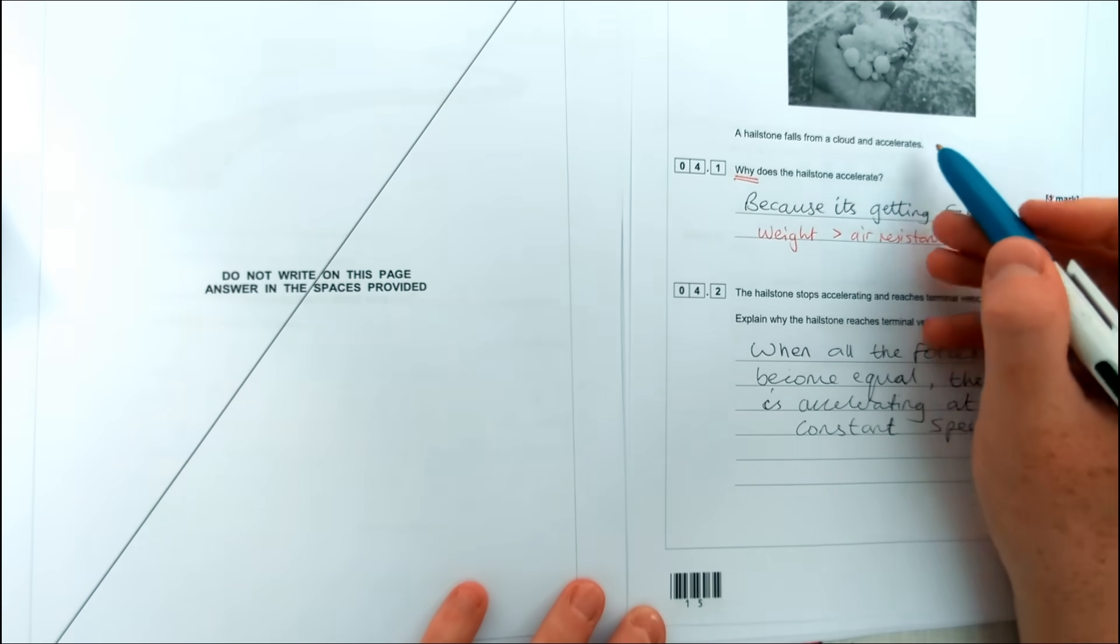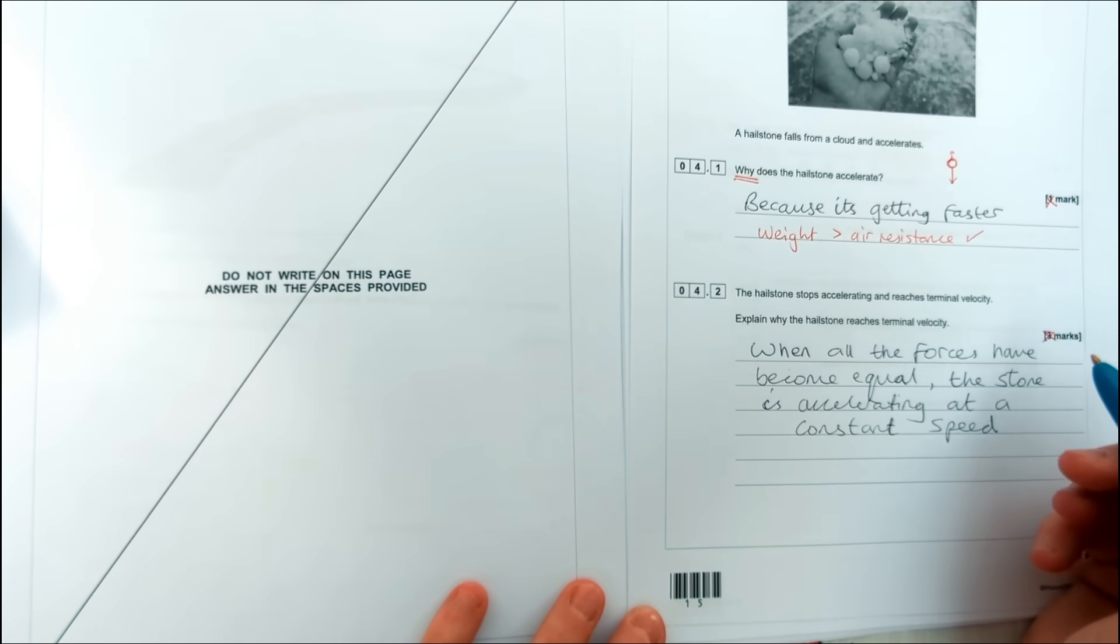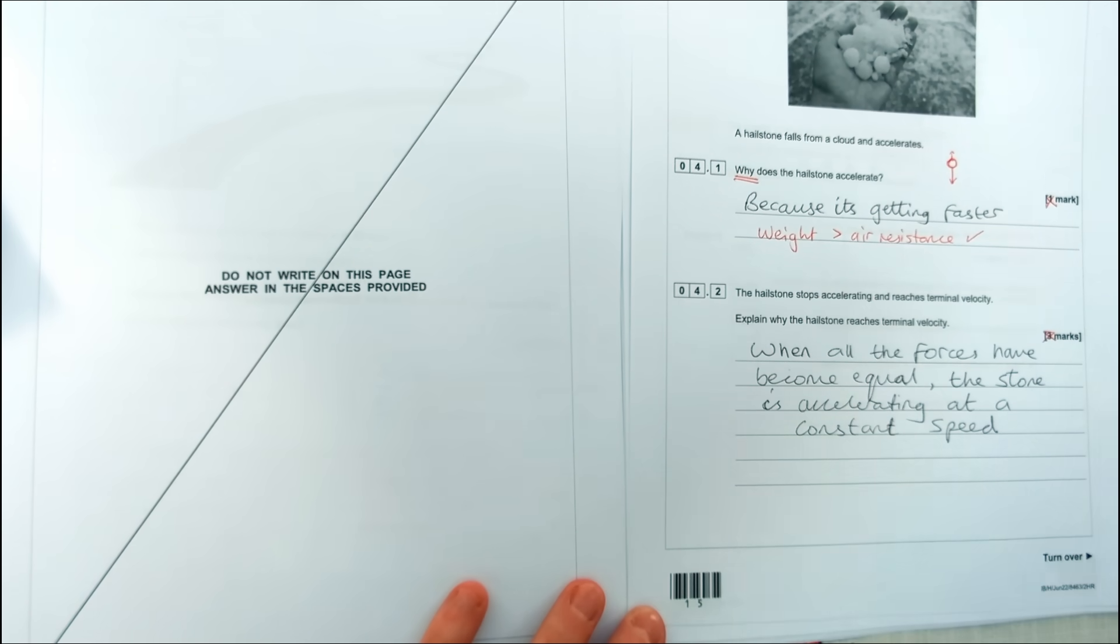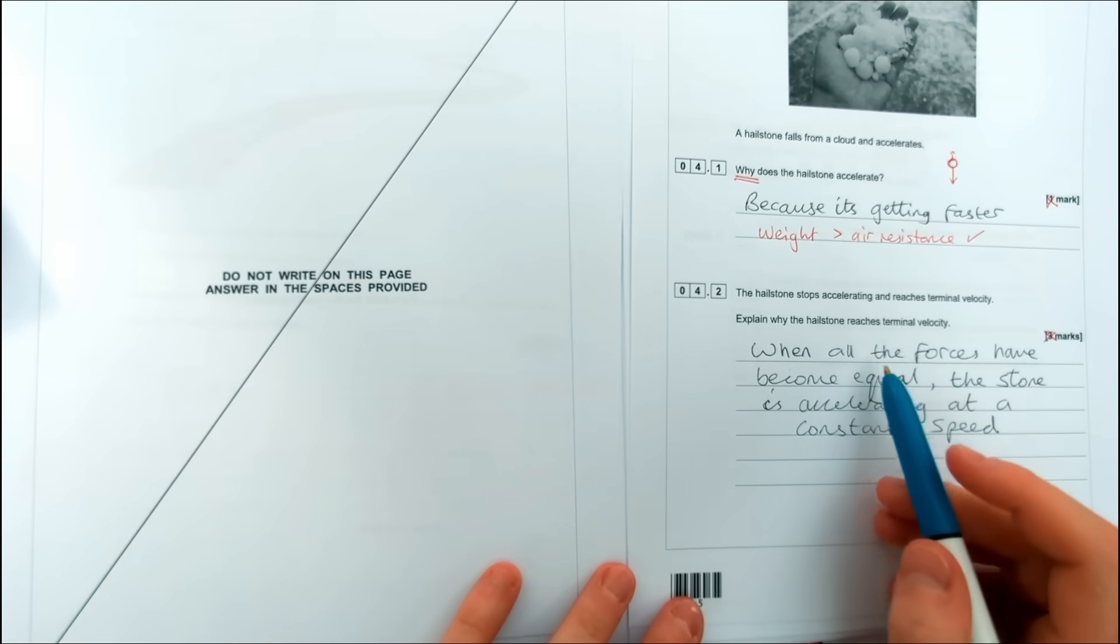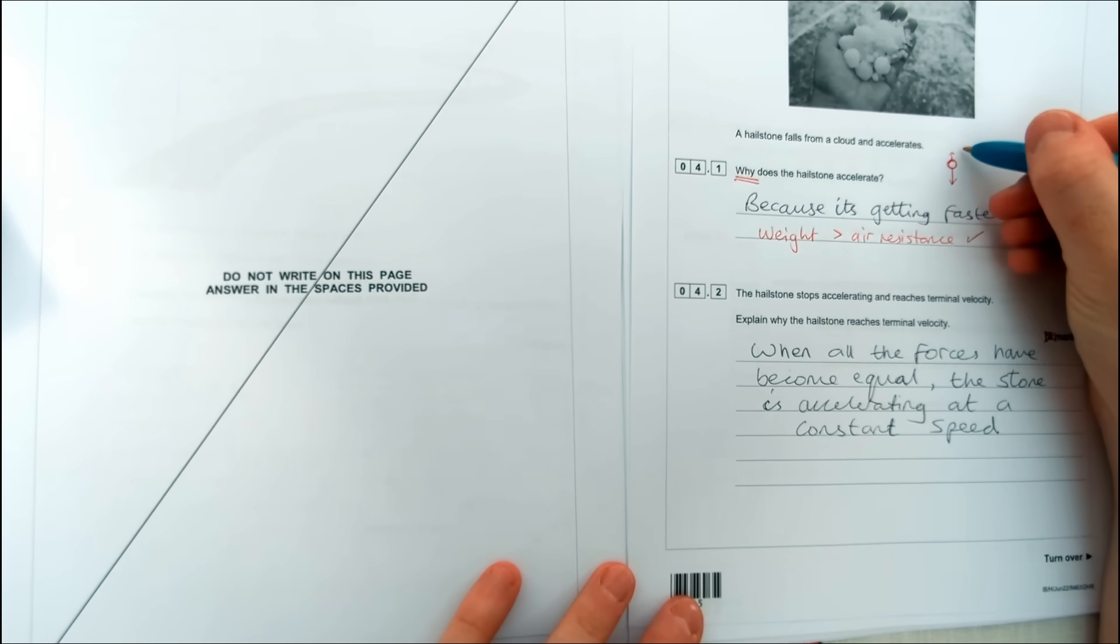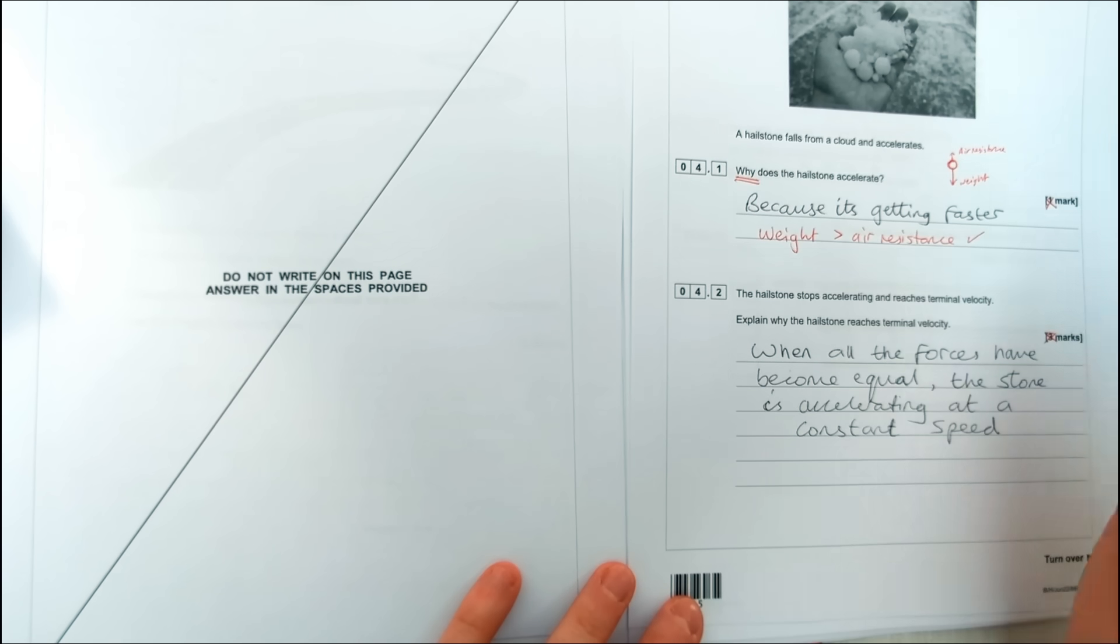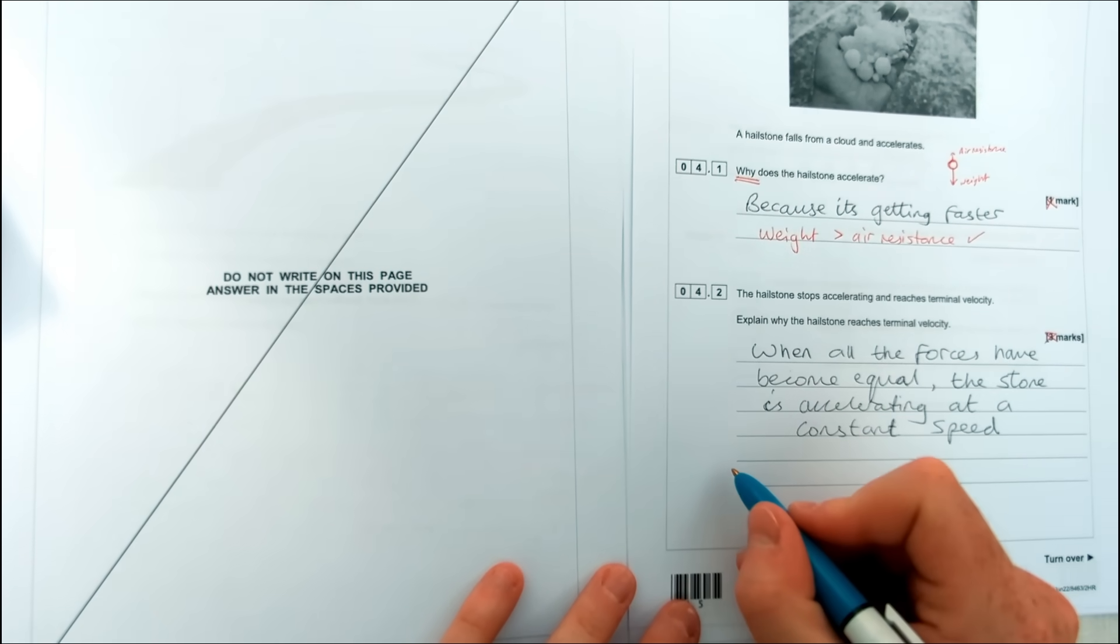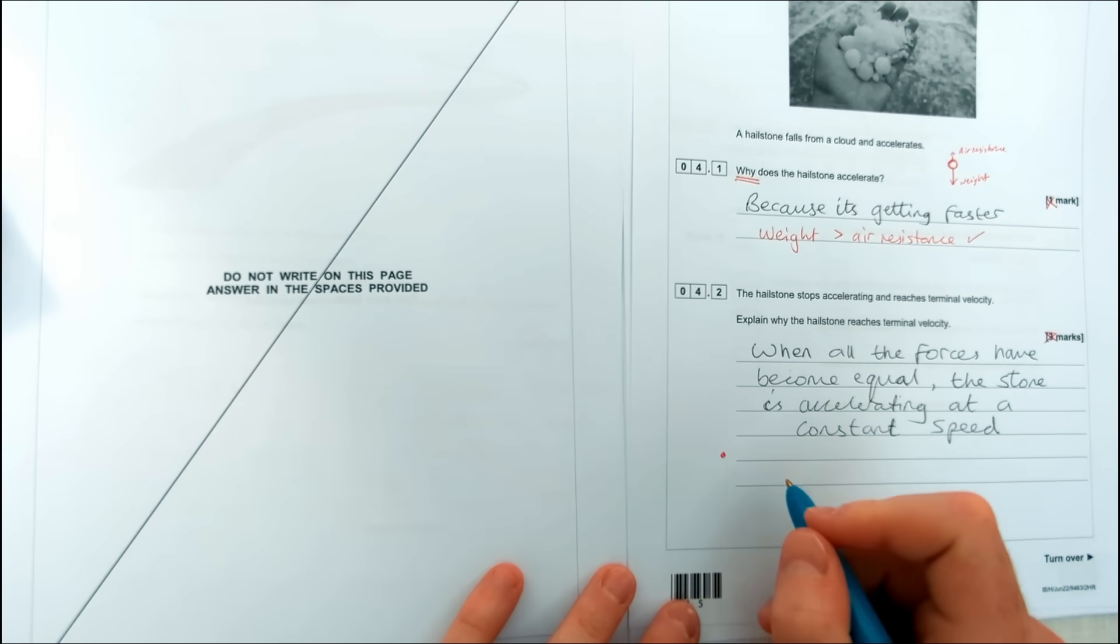This next one is all about how it reaches terminal velocity. So eventually it does stop accelerating and it reaches a constant speed. So this person said when all the forces become equal the stone is accelerating at a constant speed. Now they've come kind of close to getting the mark for forces. Let's go back to this diagram. We've got air resistance going upwards and we've got weight going downwards. Instead of saying they become equal, you'd say the forces become balanced. So that's the second mark.